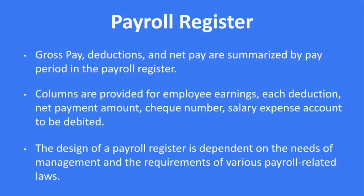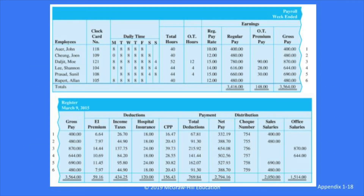Now that we know the basics behind payroll, let's look at the mechanics of recording it. Employers normally have a payroll register, which records for each employee key pieces of information such as gross pay, deductions, and net pay — all summarized by pay period. Columns are provided for employee earnings, each deduction, net payment amounts, the check number, and the salary expense account to be debited. Different employees might be connected with different accounts, and the design of the payroll register depends on the company's needs and payroll-related laws.